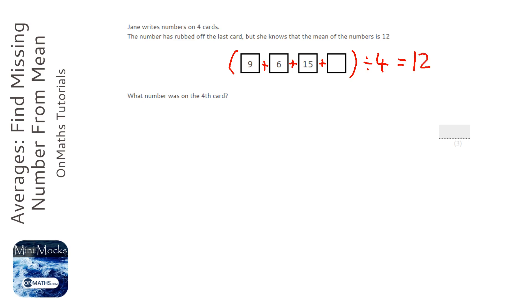So if I put an algebra letter in, let's call it x, then I can write that down. So 9 plus 6 plus 15 plus x, which is our unknown, divided by 4 equals 12.